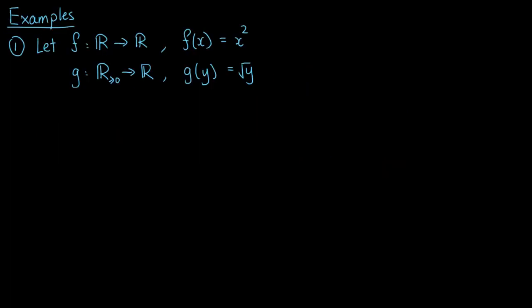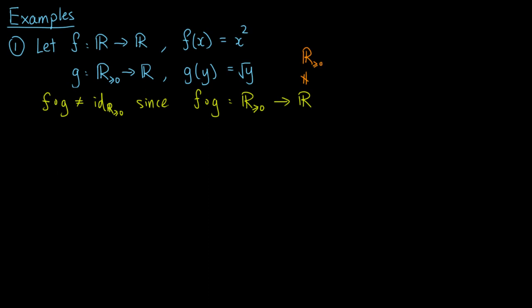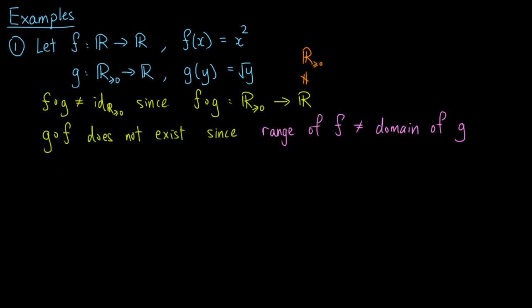Let's look at more examples. Let f from the real numbers to itself be defined by f of x equals x squared, and g from the non-negative real numbers to the real numbers be defined by g of y equals the square root of y. Observe that f ∘ g is not equal to the identity function on the non-negative reals, since f ∘ g maps from the non-negative reals to the reals. Also, g ∘ f does not exist since the range of f is not equal to the domain of g. This implies that f is not invertible.